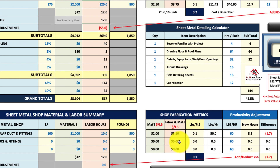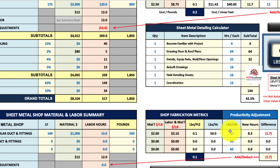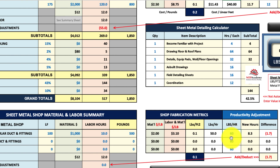Whatever comes out of your estimating program, you put your raw hours from that program here and it'll tell you what pounds per hour that is. I would leave that as what comes out of your estimating program and show your adjustments separately, so you know what you've adjusted to. If the shop can do it faster, you'll come up with a total deduct and carry that deduct over here, depending on what the system recommends.